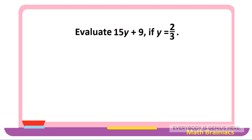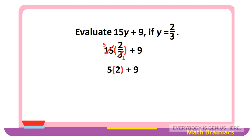Let us work on another example: evaluate 15y plus 9 if y is equal to two-thirds. We write the equation and substitute to get 15 times two-thirds plus 9. Fifteen and 3 have a common factor of 3 — there is one 3 in 3 and five 3s in 15 — simplifying to 5 times 2 plus 9. Five times 2 is 10, so 10 plus 9 gives us 19. Therefore, 15y plus 9 is equal to 19 if y is equal to two-thirds.